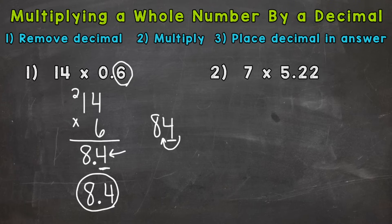So on to number two here where we have 7 times 5 and 22 hundredths. First step, remove any decimals and rewrite the problem. So we get 7 times 522.